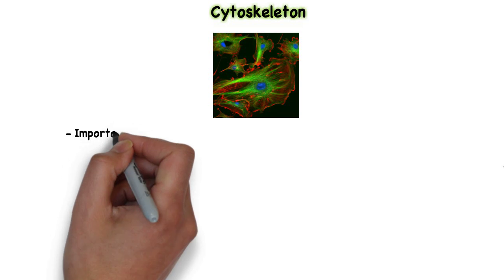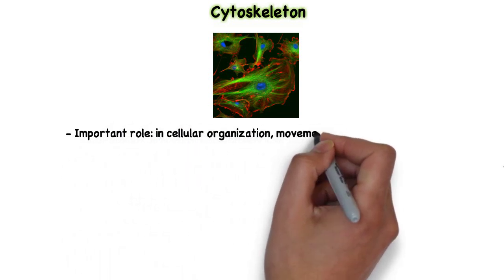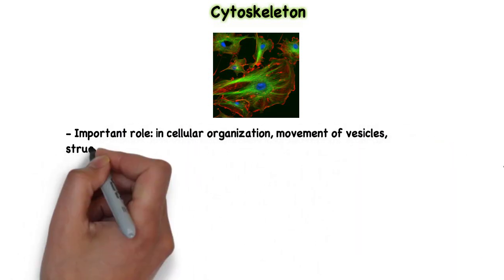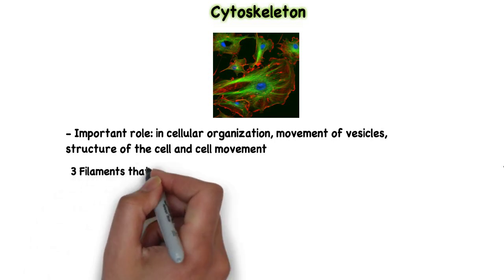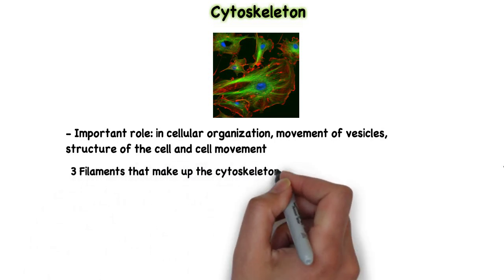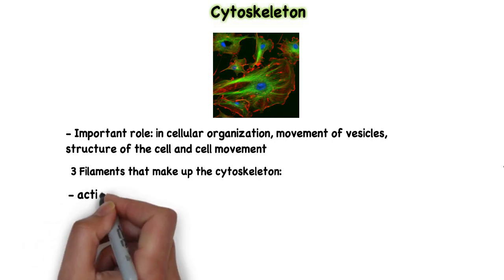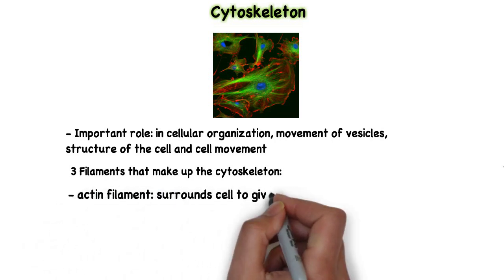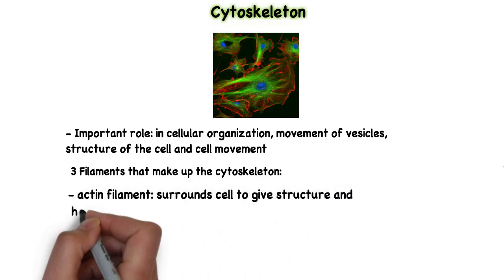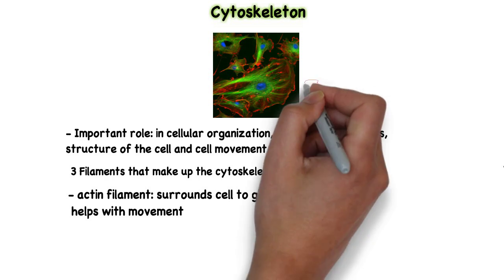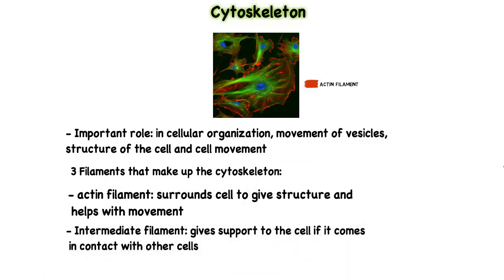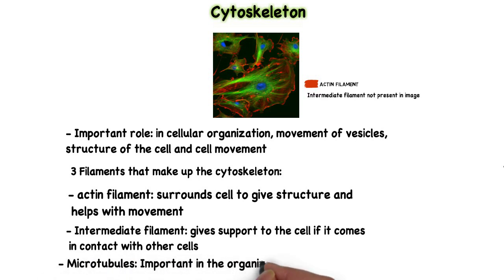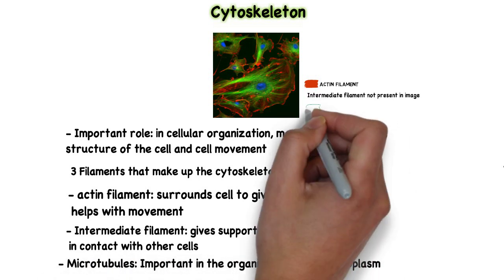The cytoskeleton has an important role in cellular organization, movement of vesicles, structure of the cell, and cell movement. There are three different types of filament that make up the cytoskeleton: an actin filament that mostly surrounds the cell for structure and movement; an intermediate filament which gives support to the cell if it comes in contact with other cells; and microtubules which are involved in the organization of the cytoplasm.